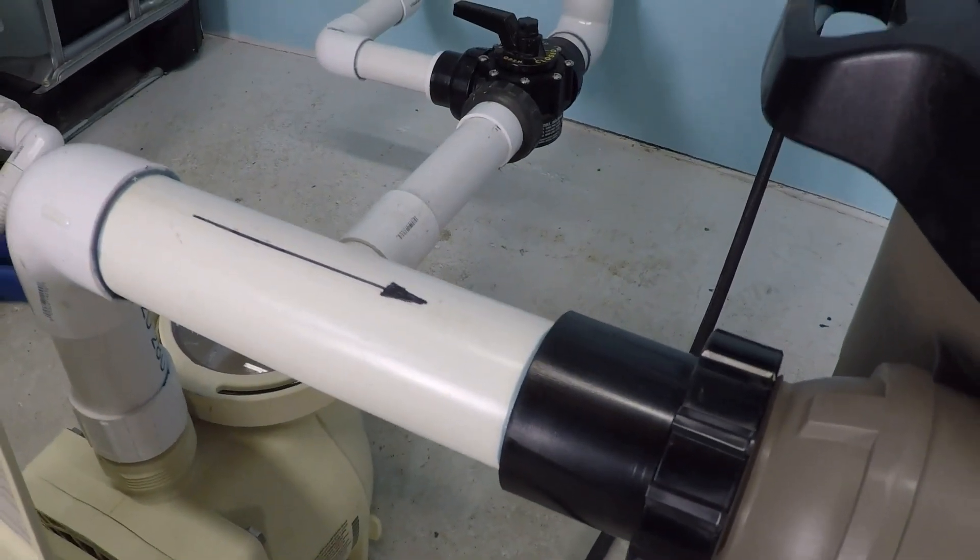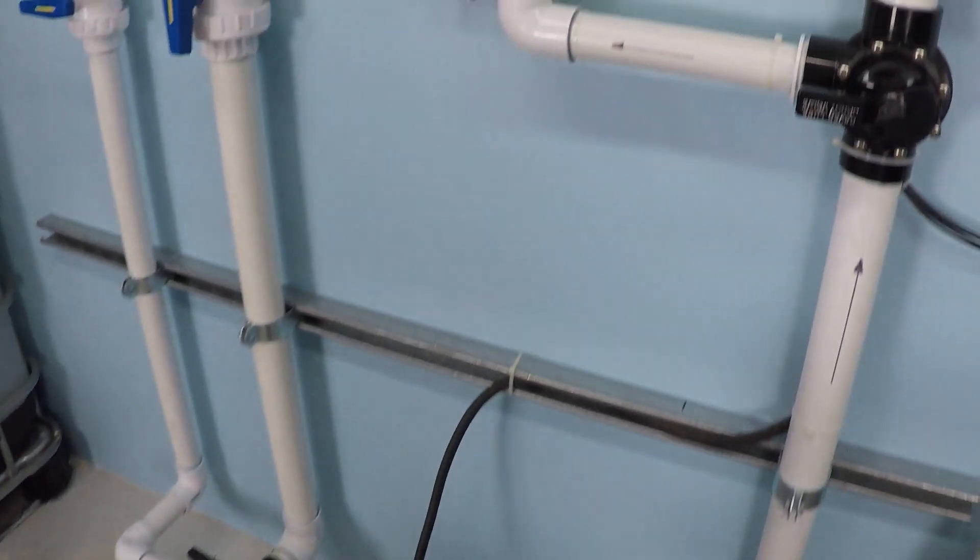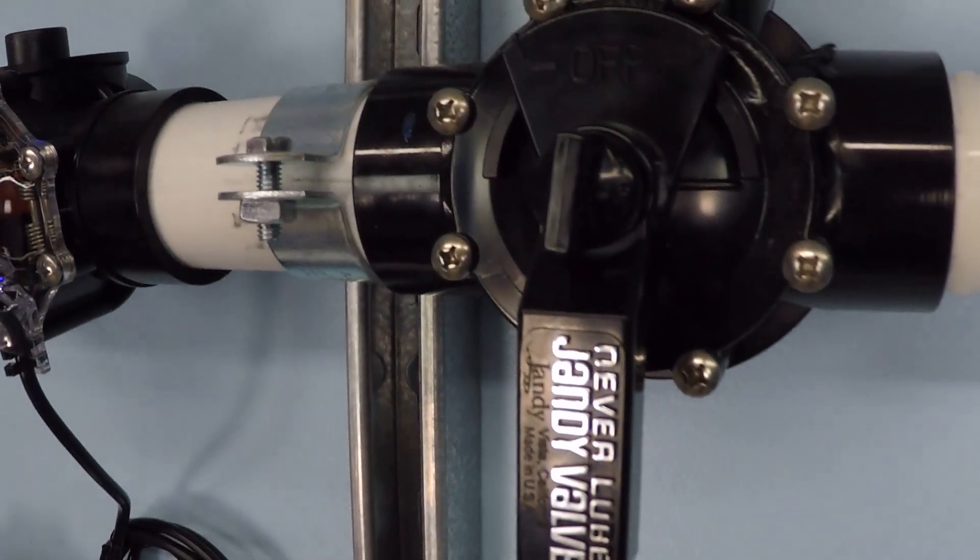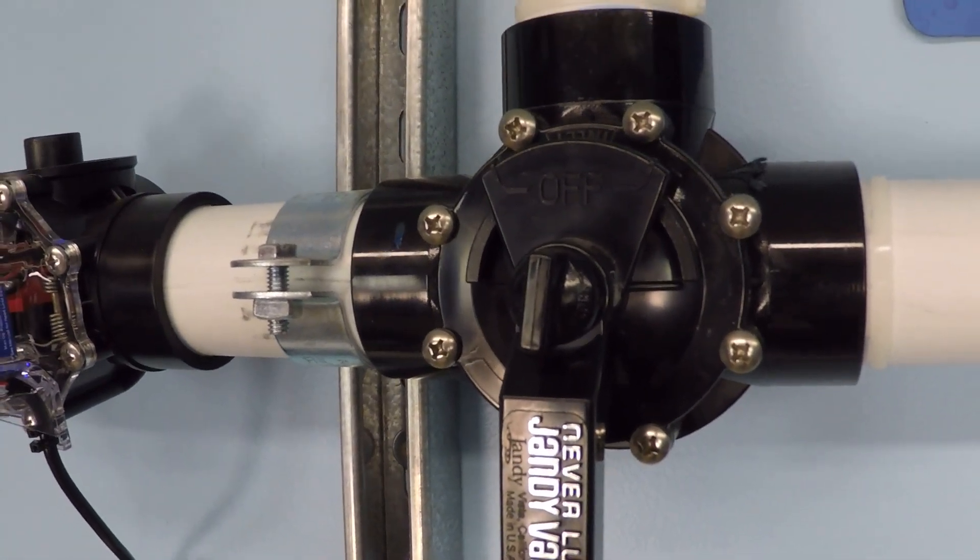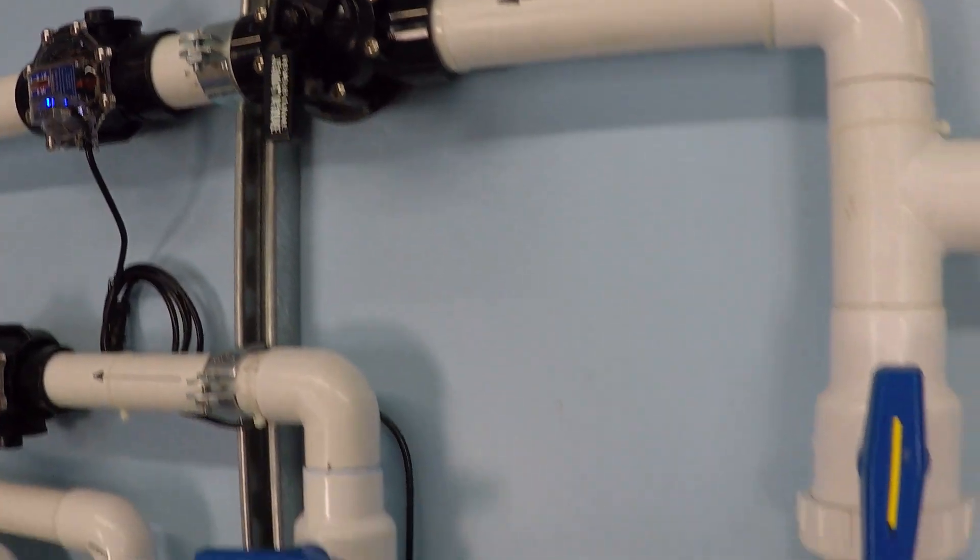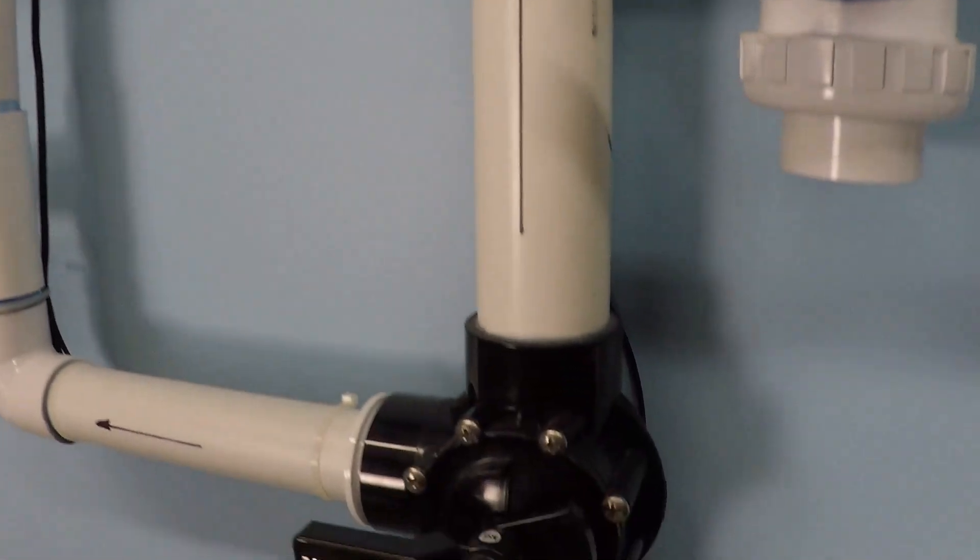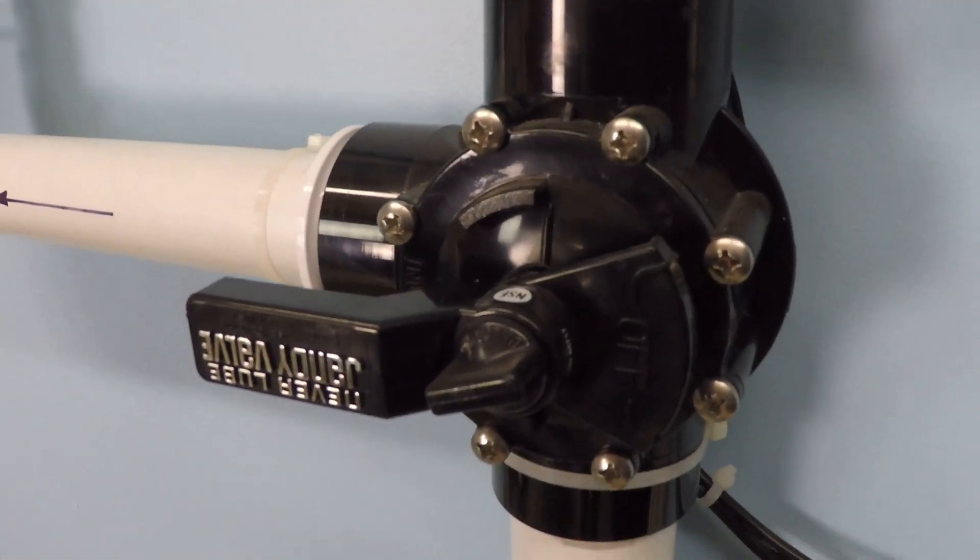So when you see a black fitting like this or especially something like this, it's not ABS material, but it's not PVC either. It's something called CPVC, and that's essentially a special heat-rated PVC pipe.